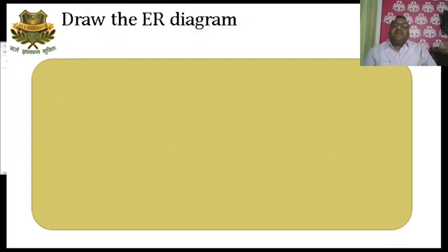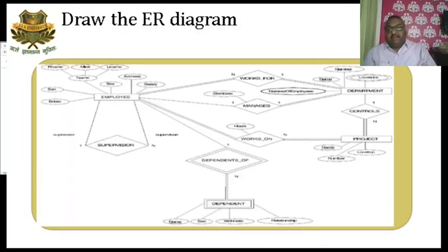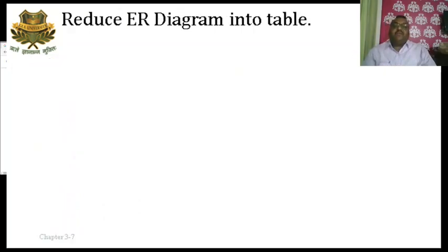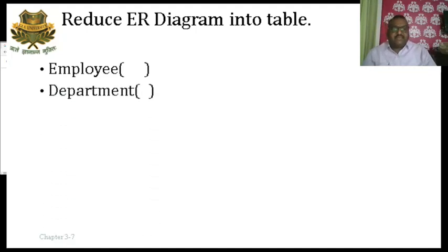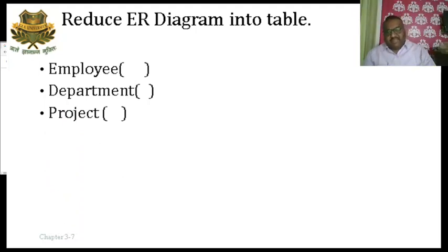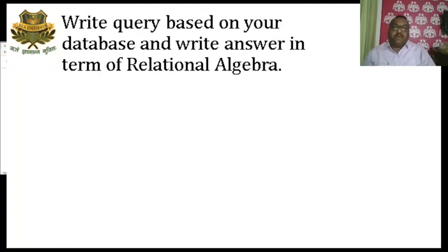Then draw the ER diagram, and after that reduce the ER diagram into tables. In the previous ER diagram there are various entities. I have taken three entities — employee, department, and projects — along with their associated attributes. You have to reduce this ER diagram into a table.